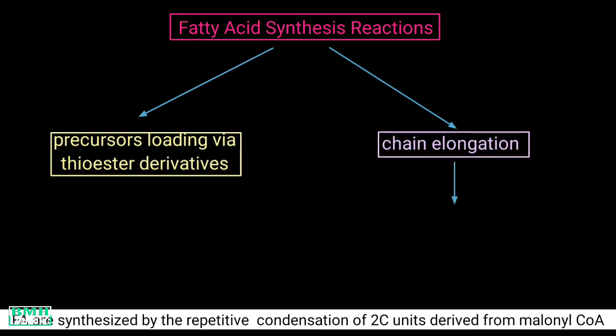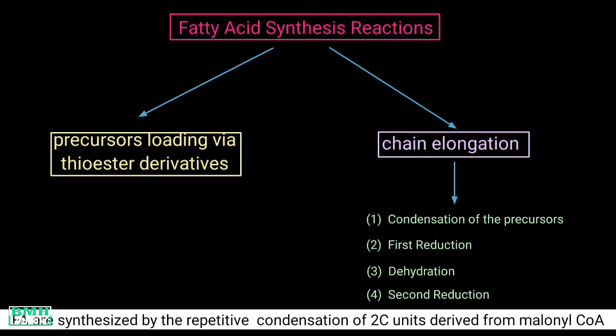Chain elongation includes the following four steps: first is condensation of the precursors, then second is first reduction, then we have dehydration, and the fourth one is second reduction.